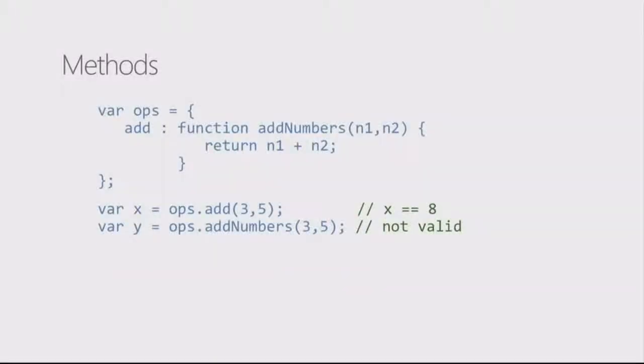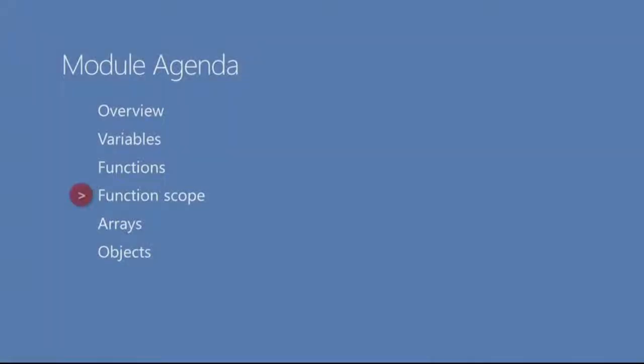But going back over into our example, you know, why is it not valid to say add numbers? It looks like it's hidden to me. You are correct. And in fact, that is what I'd like to get into right now. And that is scoping, which is a pretty big deal, especially when we're dealing with our Windows 8 applications and we're trying to figure out how we're going to do proper structuring of our code. A lot of it has to deal with this topic, and that is function scope.